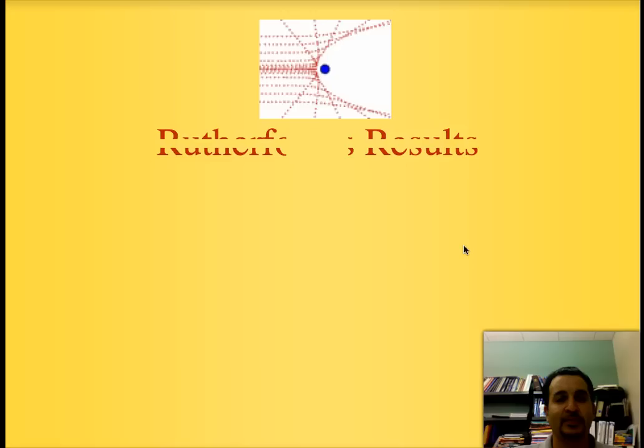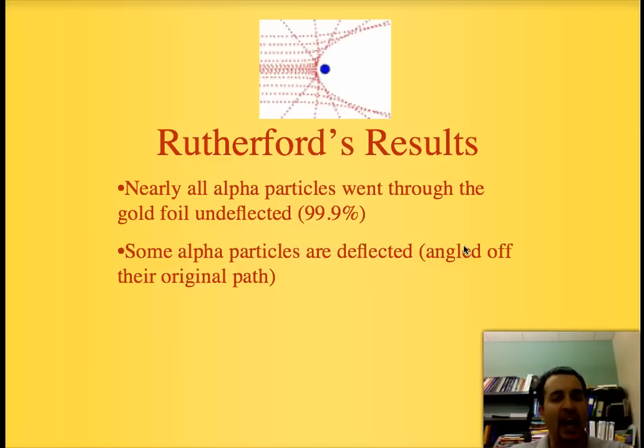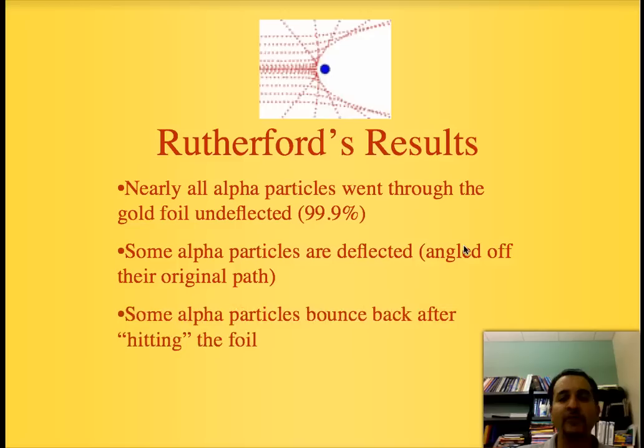His results were such as this. One, 99 plus percent of his alpha particles went undeflected through the gold foil. Two, some, just a few, were deflected at a significantly larger angle. And finally, some of the alpha particles actually bounced back.